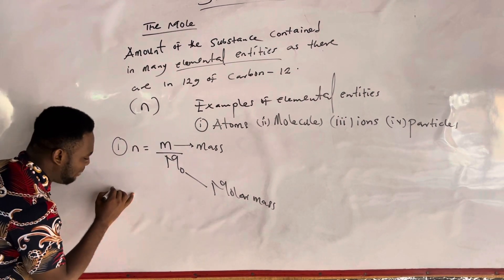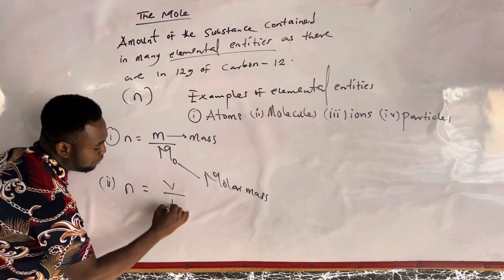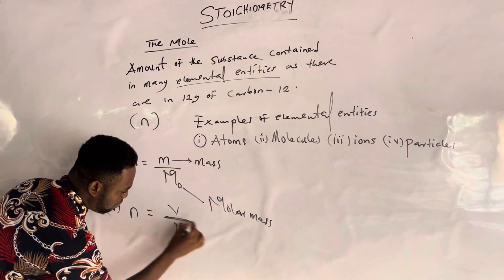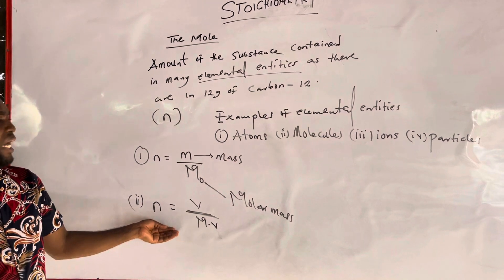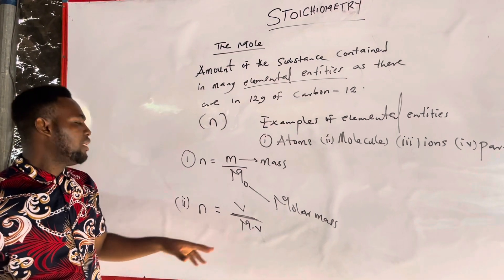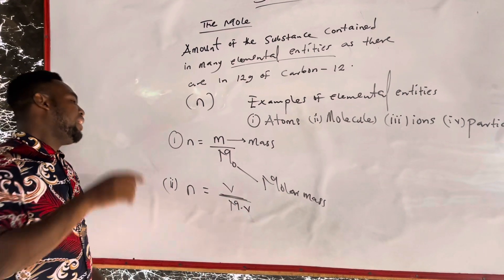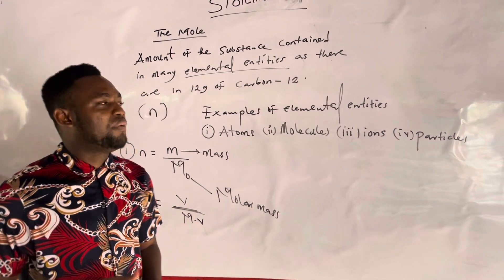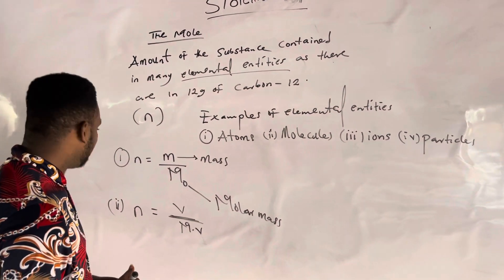Formula 2: number of moles = volume / molar volume (Mv). This formula works for substances that are gases. When you are given a gas with a volume and asked to calculate the number of moles, use volume over molar volume. The molar volume of any gas is 22.4 dm³.